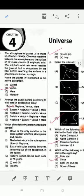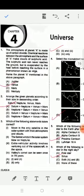The atmosphere of planet X is made up of carbon dioxide. Chemical reactions between the atmosphere and the surface of X make clouds of sulfuric acid. This sulfuric acid rain never reaches the ground but evaporates by the heat before reaching the surface in a phenomenon known as virga. You have to name the planet X mentioned in the above paragraph.